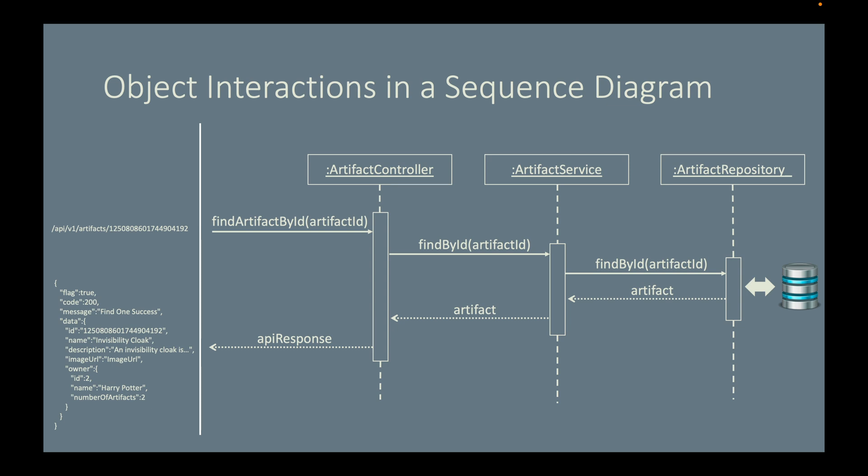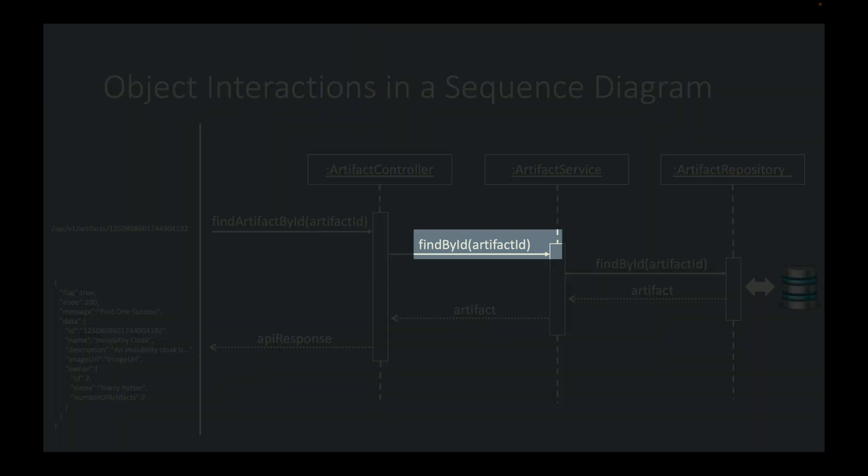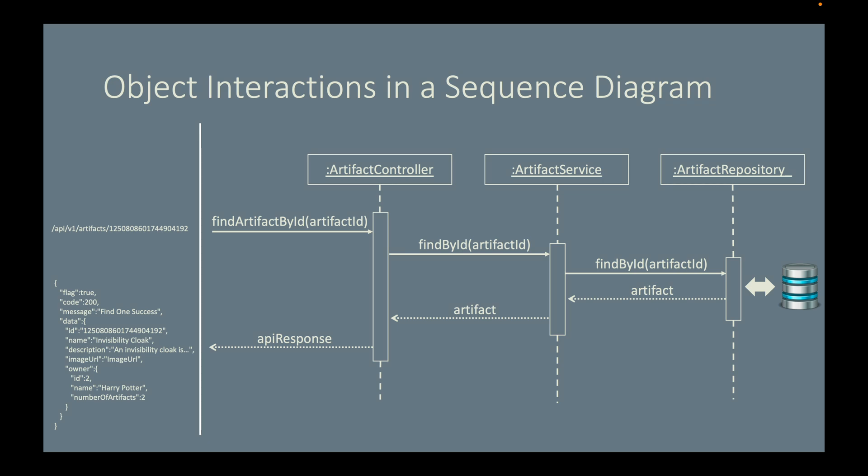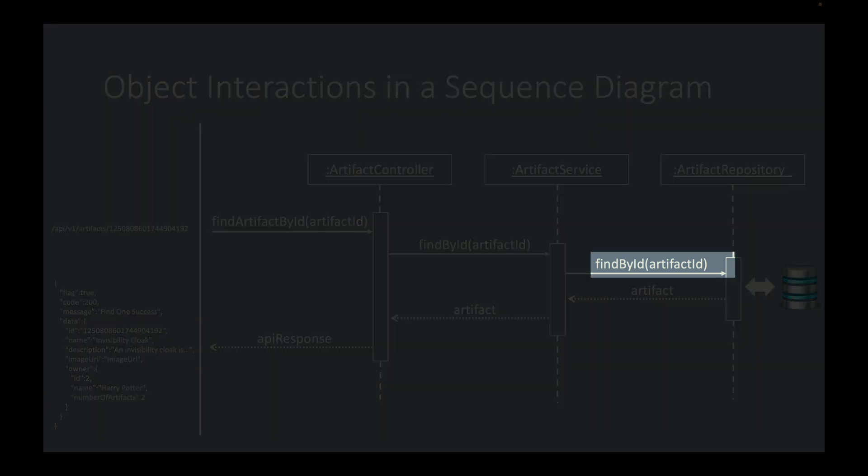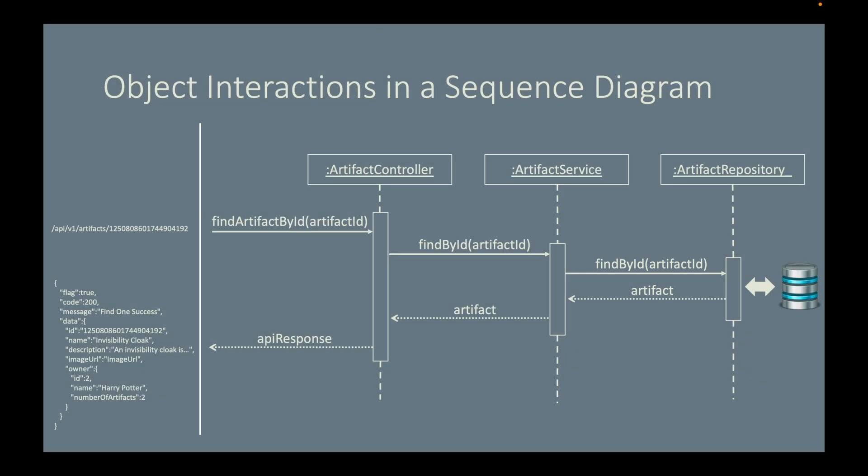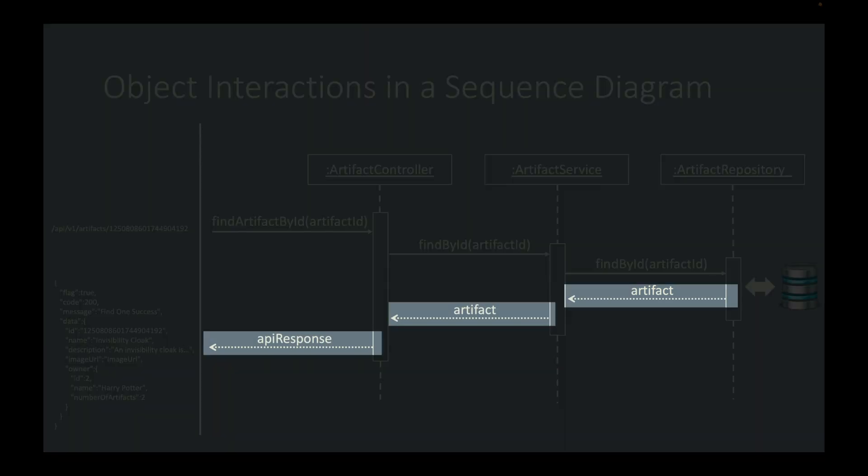The controller then calls the FindById method defined in the ArtifactService class, which then calls FindById method defined in the Artifact repository. Arrows with dotted lines represent returned values.